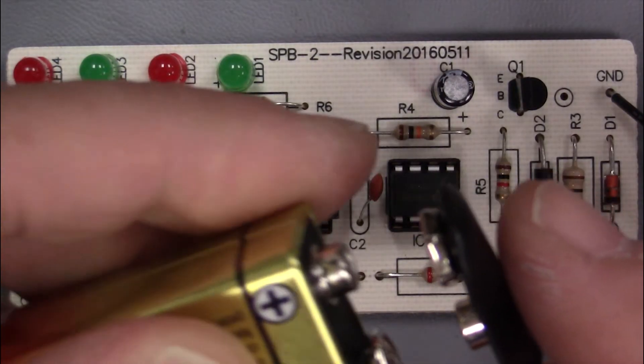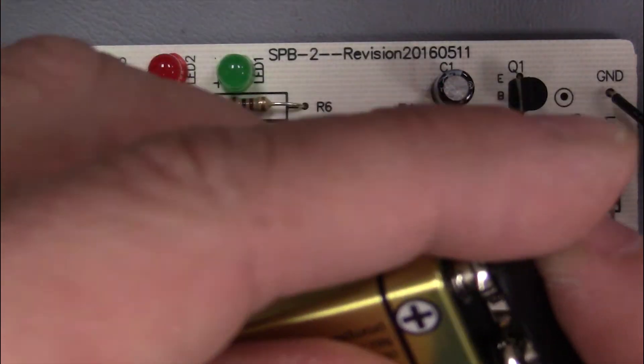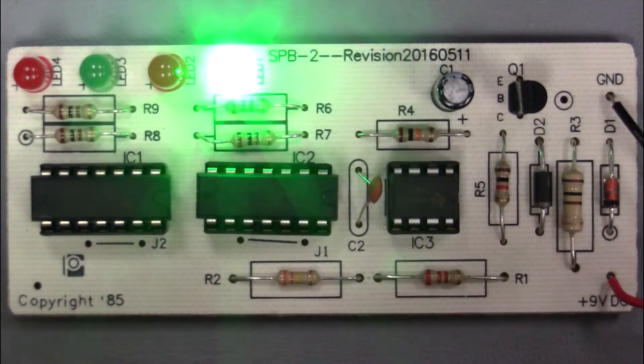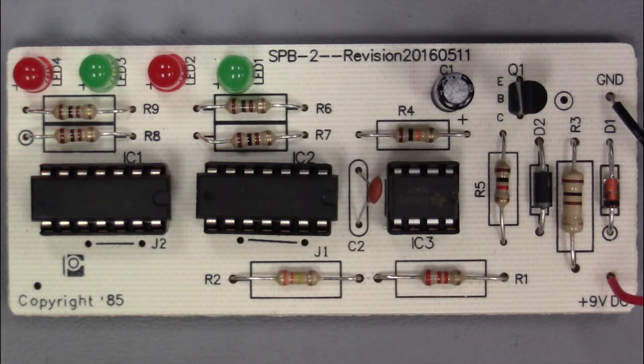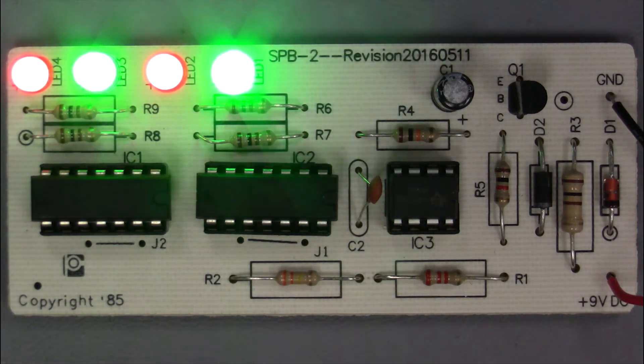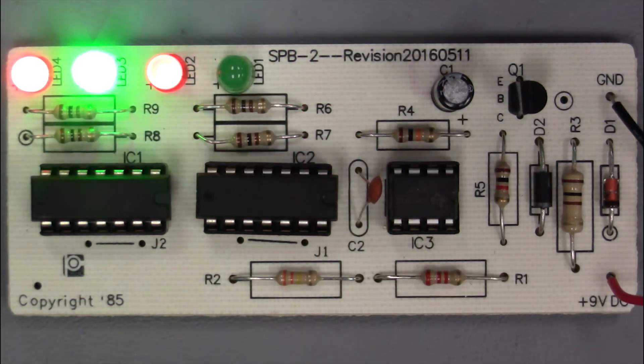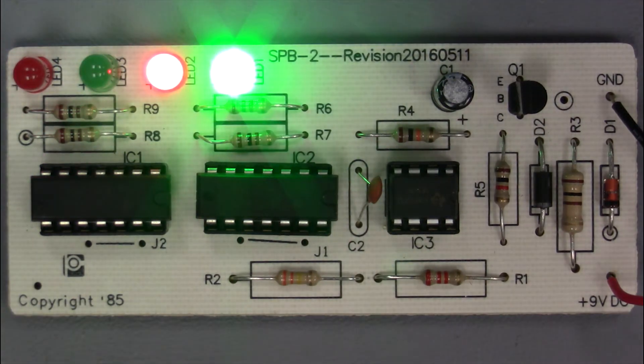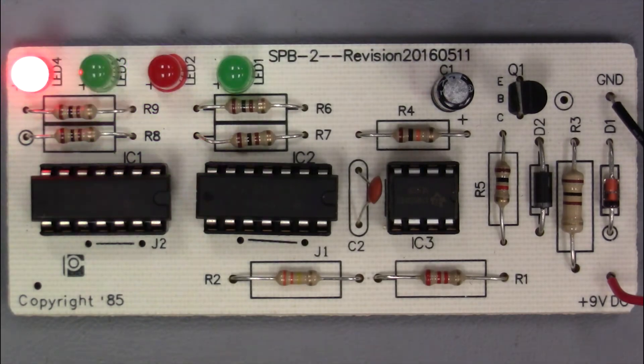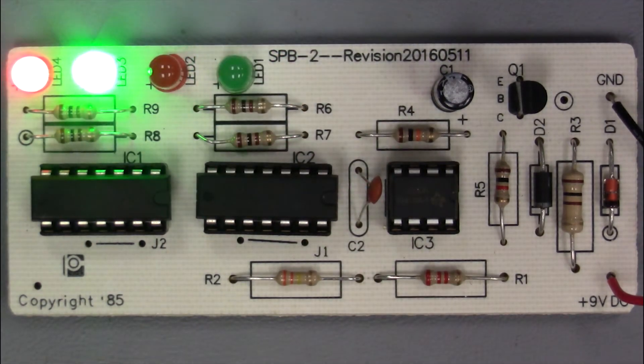After soldering all the components and installing the ICs, plug in a 9-volt battery. Assuming everything was soldered correctly and the components are not defective, your solder project should scroll the LEDs like this. If it doesn't, check for solder bridges and incomplete solder joints using a magnifying glass.